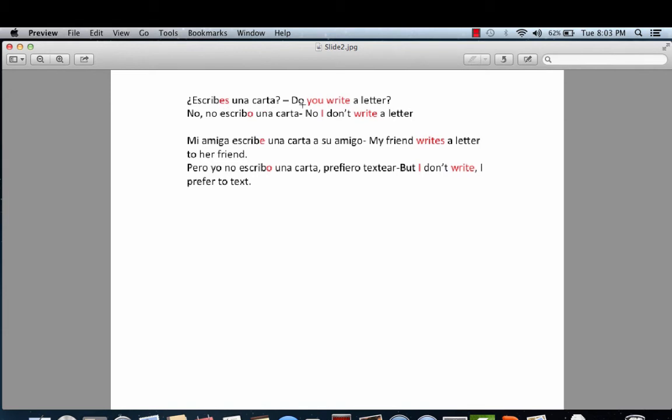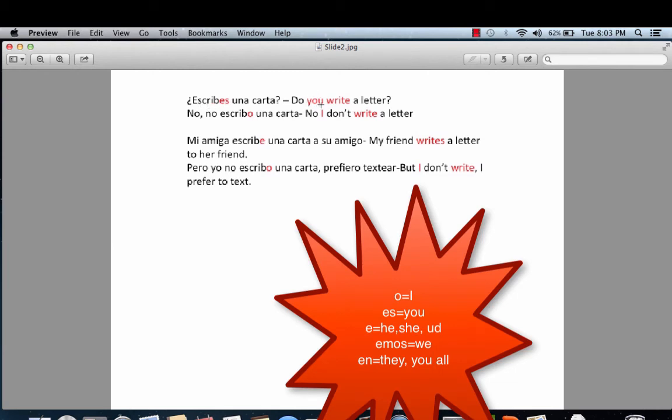¿Escribes una carta? Do you write a letter? The ES attached to the stem of the verb escribir represents you. You write. No, no escribo una carta. No, I don't write a letter. The letter O attached to the stem of the verb escribir indicates I. I write. In this case, I don't write, because I have the word no in front of the verb. Mi amiga escribe una carta a su amigo. My friend writes a letter to her friend. The letter E attached to the stem indicates that it's either a he, a she, or an usted writing. In this case, it's a girl, because it's specified here. My friend writes a letter to her friend.